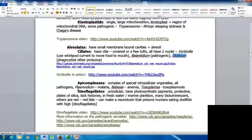The Apicomplexa have a complex of special intracellular organelles. All of these are pathogens. This includes Plasmodium species that cause malaria, Babesia that causes anemia, and Toxoplasma that causes toxoplasmosis.